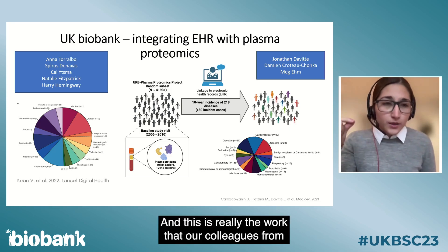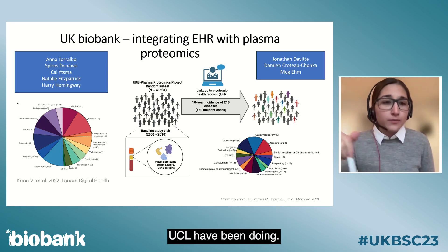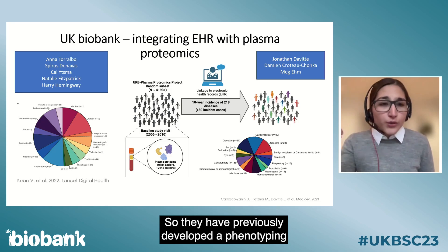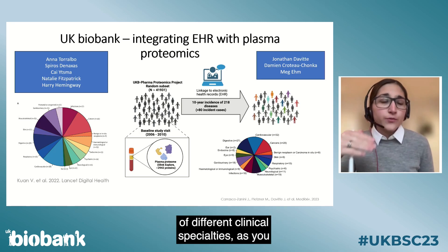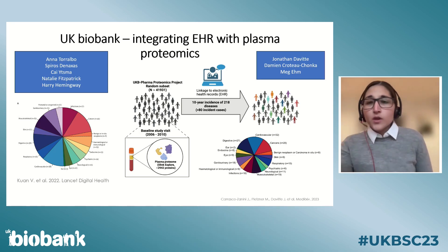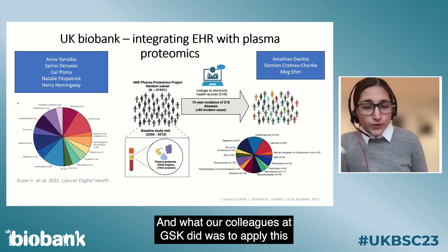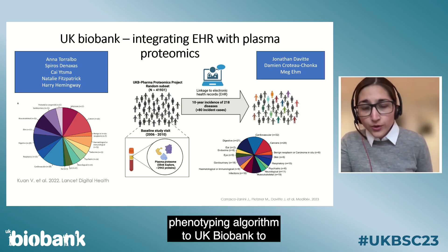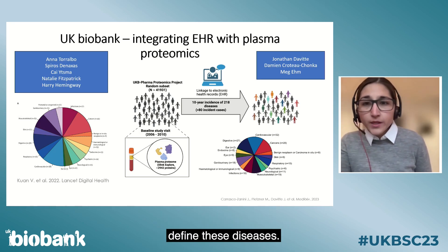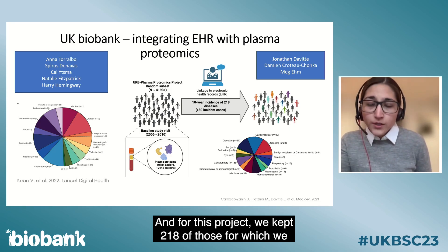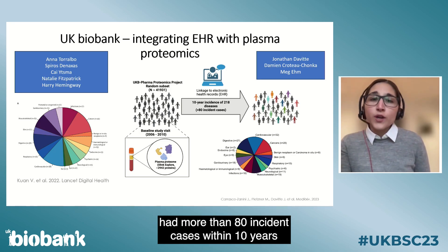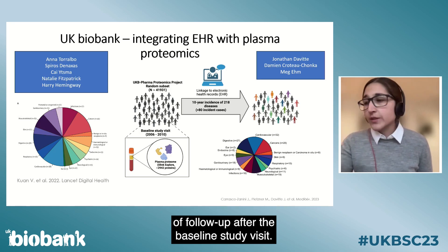This is really the work that our colleagues from UCL have been doing. They previously developed a phenotyping algorithm to define 308 diseases spanning a range of different clinical specialties. Our colleagues at GSK applied this phenotyping algorithm to UK Biobank, and for this project we kept 218 of those diseases for which we had more than 80 incident cases within 10 years of follow-up after the baseline study visit.